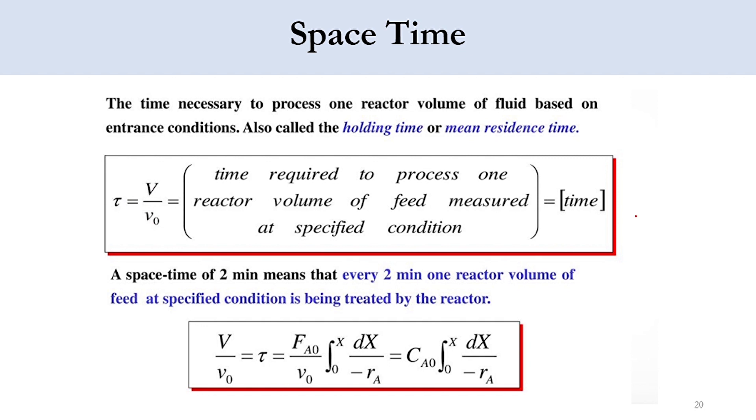It is the time required to process one reactor volume of feed measured at the specified condition. If we get an answer of two minutes, what does that mean? That every two minutes one reactor volume of feed at specified conditions is being created by the reactor. After two minutes new batch will come, four minutes second batch will come. It means that one reactor batch or one reactor volume is processed in two minutes, or it is said as V over V0 equals tau.